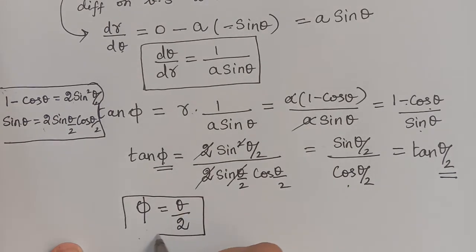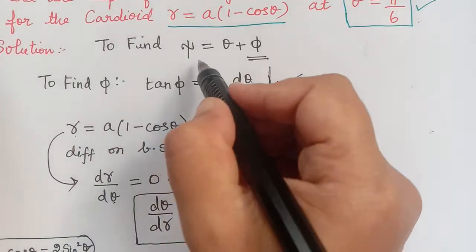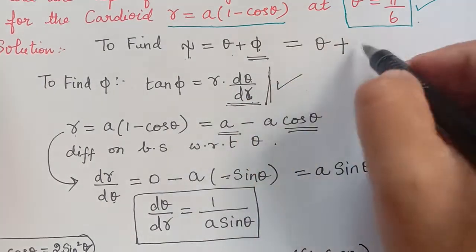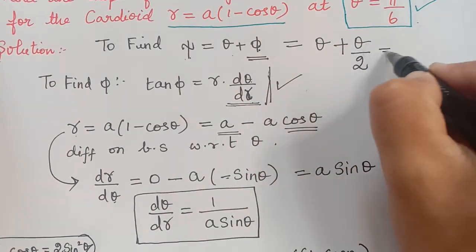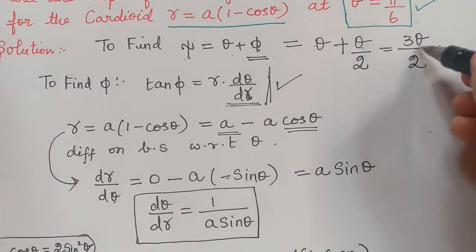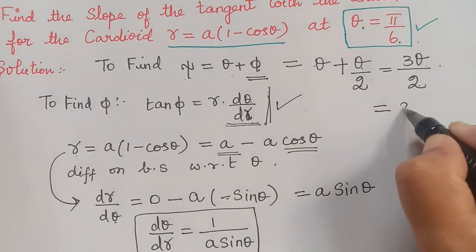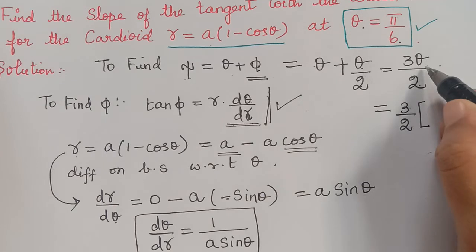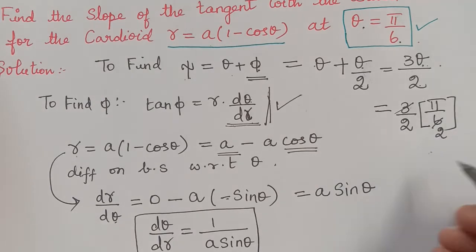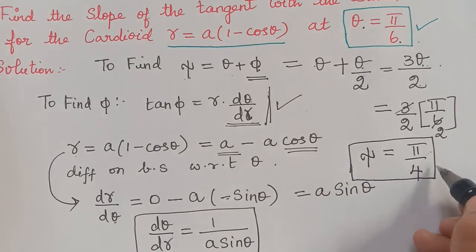Now we want xi = θ + φ. Since φ = θ/2, we get xi = θ + θ/2 = 3θ/2. The question gives θ = π/6, so xi = (3/2) · (π/6) = π/4.